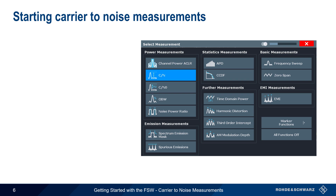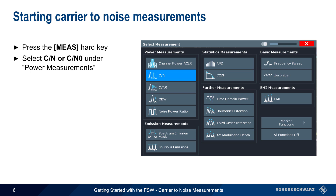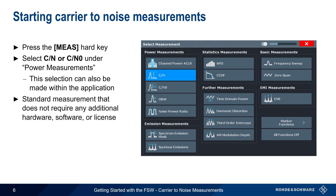To make Carrier-to-Noise measurements on the FSW, press the Measure Hard key and then select either Carrier-to-Noise or Carrier-to-Noise Density from the list of available power measurements. Note that this selection can also be made within the application itself. Carrier-to-Noise is a standard spectrum measurement and does not require any additional hardware, software, or license code.